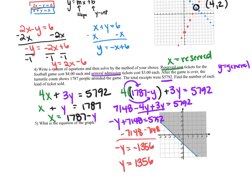If we want to find the reserve tickets, we come back to our equation. We know we had 1,356 general tickets, so we subtract: 1,787 minus 1,356 gives 431 reserve tickets. So x equals 431, and you can write the solution as the ordered pair (431, 1,356).